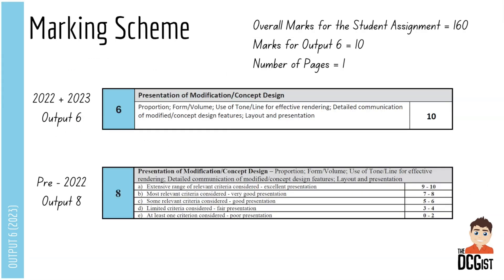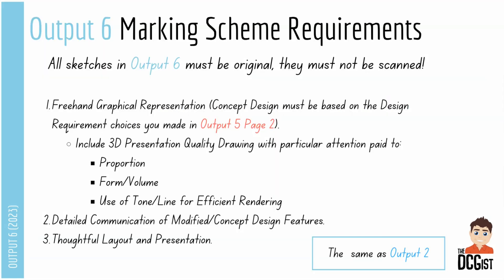Looking at the marking scheme, there are 10 marks for this output and it's on one page. Output 6 in 2022-2023 is the same as what was the pre-2022 output 8. Looking in a bit more detail at the marking scheme requirements — first of all, it doesn't say this in the marking scheme but it is really important: all of the sketches you use in output 6 must be the original ones, not scanned. Most of this output is very similar to output 2, except this time it's for your concept design rather than the one that already existed.